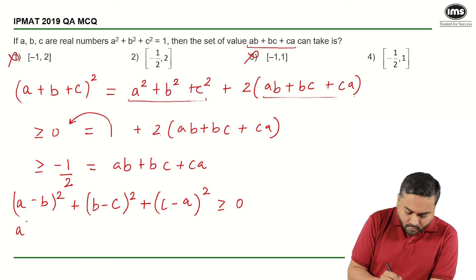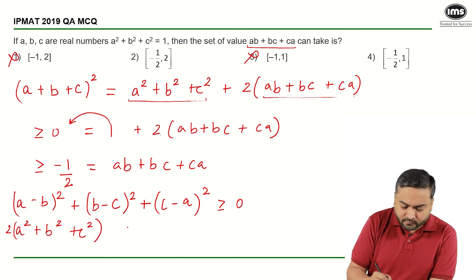Again if I expand this, what do I get? I will get 2A² + B² + C² - 2(AB + BC + CA). This is ≥ 0.